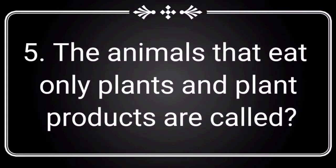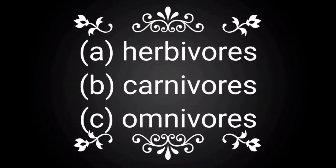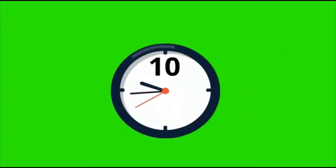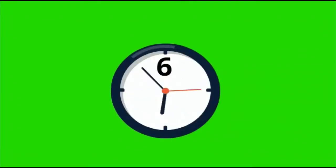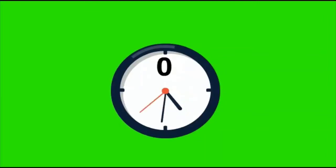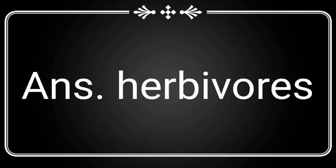Question number 5: The animals that eat only plants and plant products are called what? You have three options — Option A: Herbivorous, Option B: Carnivorous, Option C: Omnivorous. Think the correct answer within 10 seconds. The correct answer is Herbivorous. Herbivorous is the correct answer for this question.